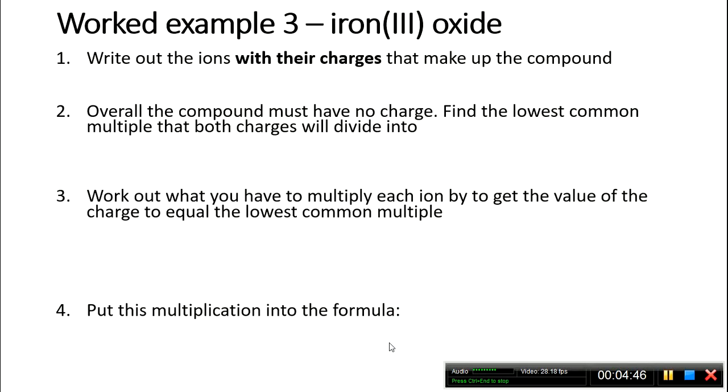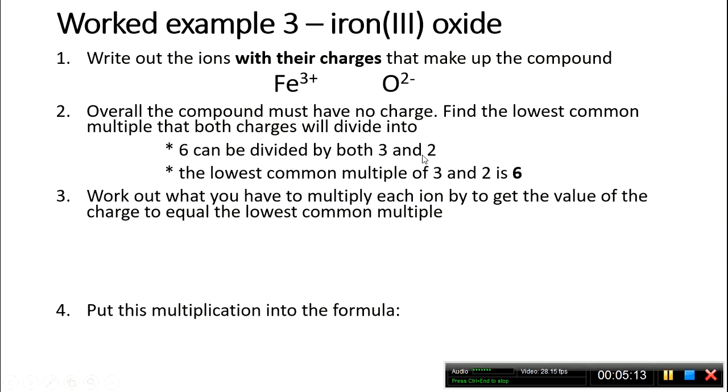Now for our third example, iron(III) oxide. We've got a 3+ charge due to the Roman numeral 3, and the oxide's got a 2- charge. Looking for the lowest common multiple, both 3 and 2 will divide into 6. So 6 is the lowest common multiple.